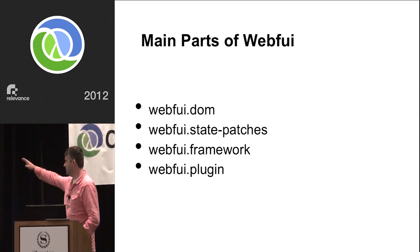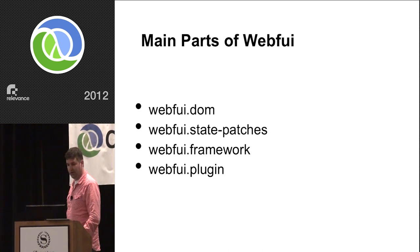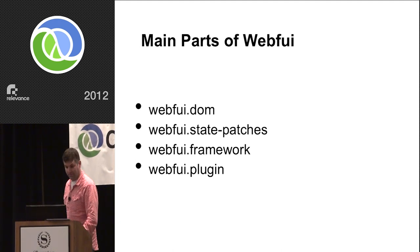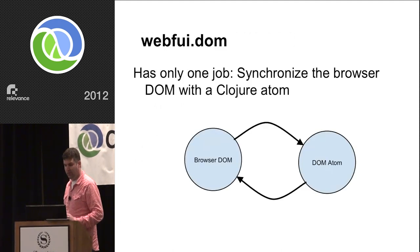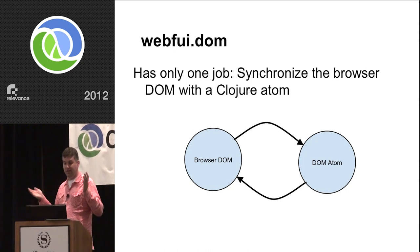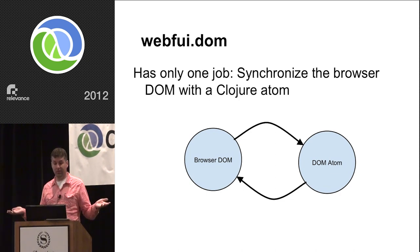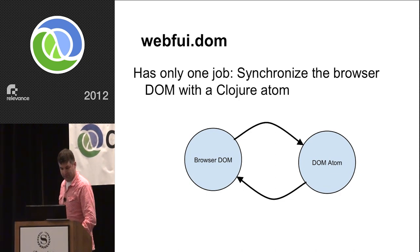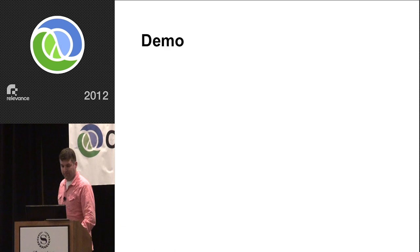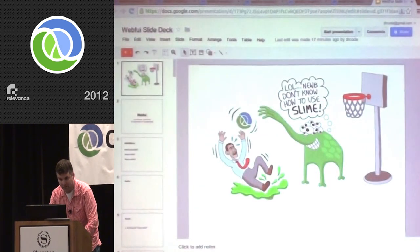There are four parts to WebFui — pretty much independent libraries — and I'm going to go through them all one after another. The first one, and the most low-level, is WebFui DOM. WebFui DOM has only one job: to take a Clojure atom and synchronize it with the DOM of the browser. Let's look at a demo application that does this.